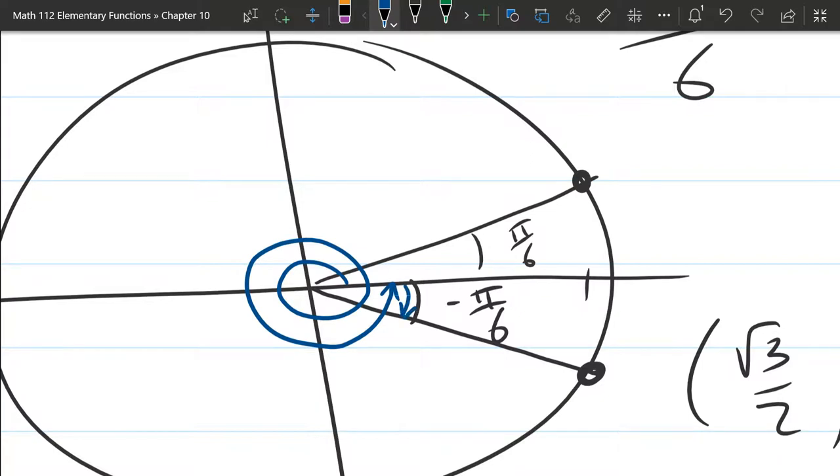So in blue, this is that 23π over 6 right there. You did the two full rotations and then the little backwards rotation to end up there.